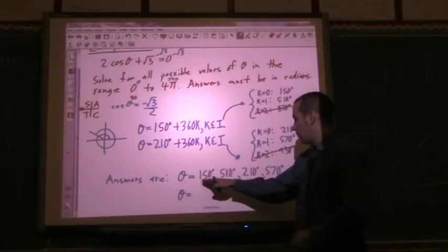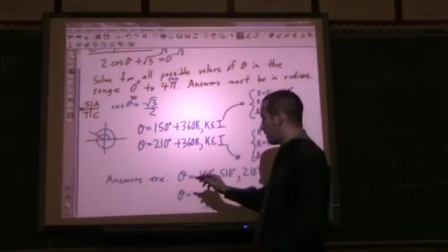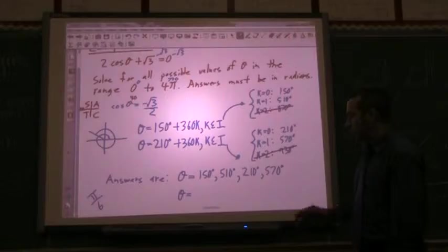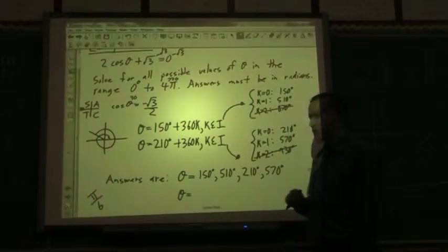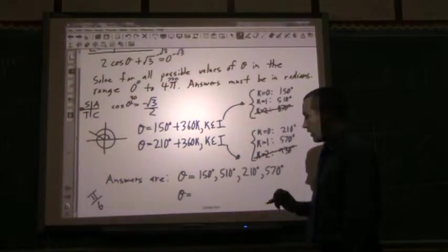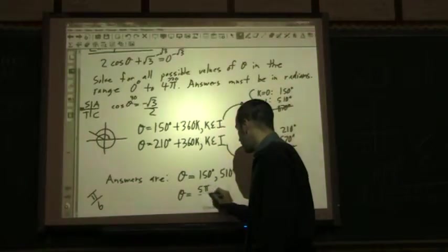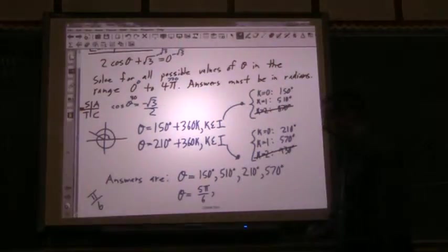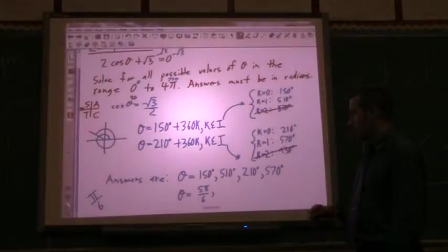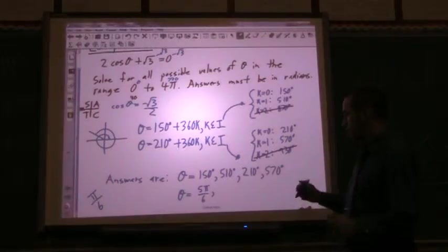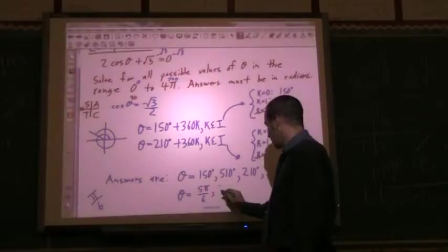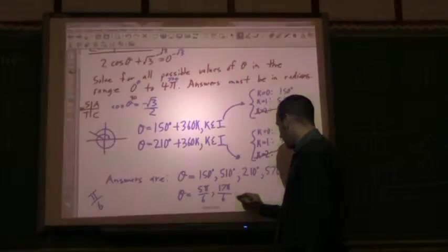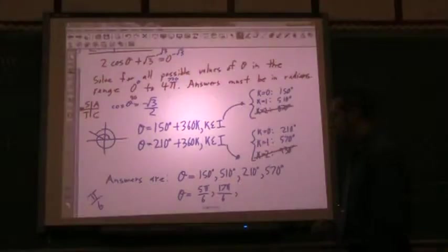So we're just going to have to convert each one into radians. Now, these are all multiples of 30, 30 being π over 6. So there's 30. So I have to think about how many 30s is there in 150? Well, there's 5. So then this one is 5π over 6. 510. So I have to stop and say, well, how many 30s is 510? Well, that's 17. So I end up with 17π over 6. And you're 17π over 6, so you're 17 30s.